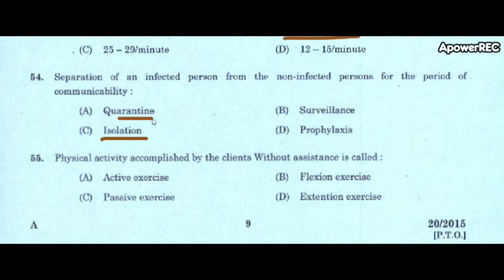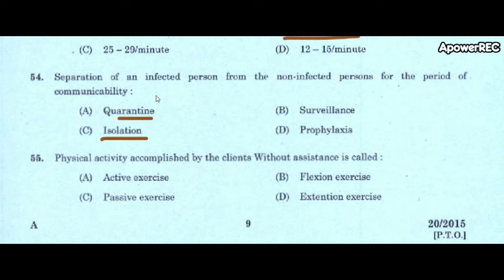Quarantine is a restriction of movement of people to prevent the spread of diseases. This happened in China recently with the coronavirus attack. Isolation is the separation of an infected person from non-infected persons. Quarantine restricts movement to prevent spread of disease; isolation separates infected from non-infected persons.